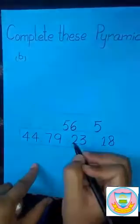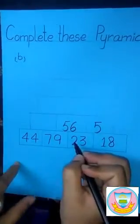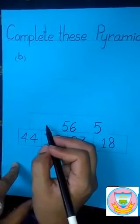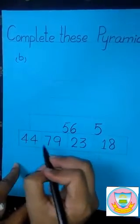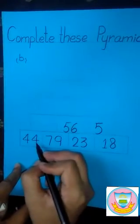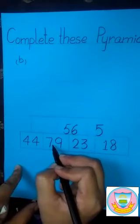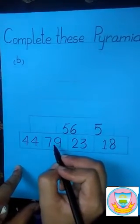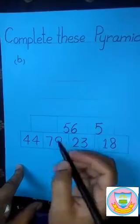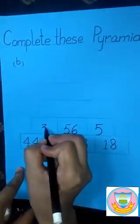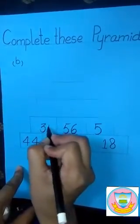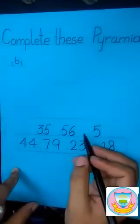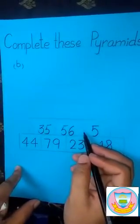56 is the right digit. Now we fill the last box of this row. We subtract 79 by 44. When we subtract 79 by 44, we get the answer of 35. We have now filled the 3rd row of this pyramid.